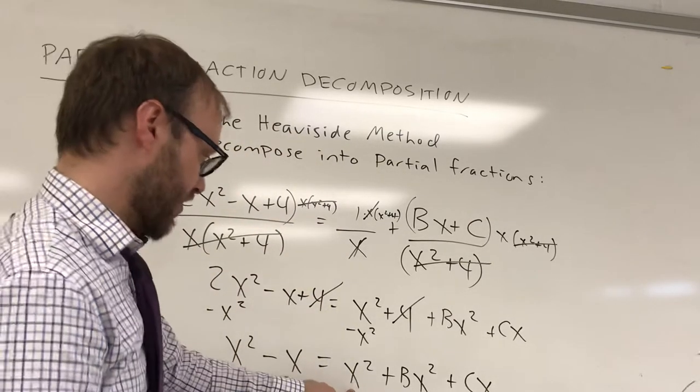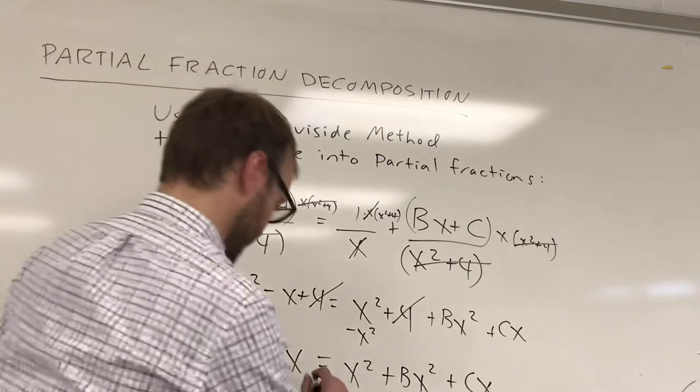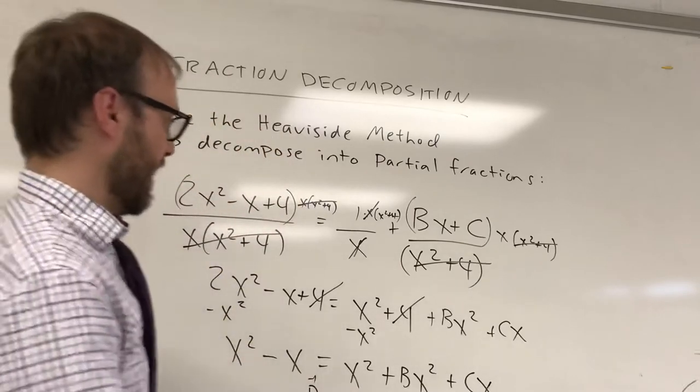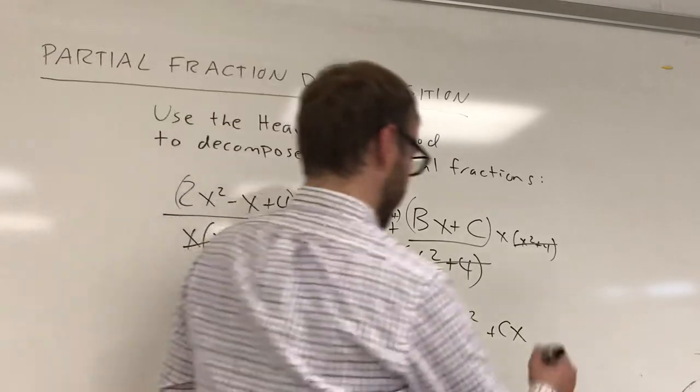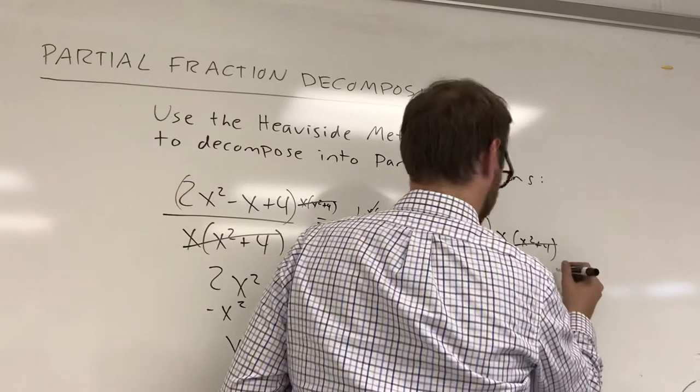Because I have 1x squared and a bx squared and these two things need to end up to equal 1x squared. Well that tells me that b is going to be negative 1. So I've still found a way to find my b and I already knew that my a was equal to 1.